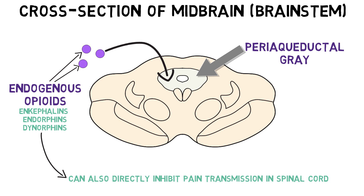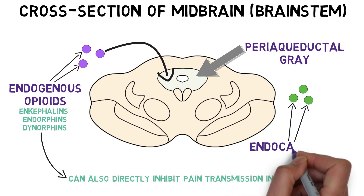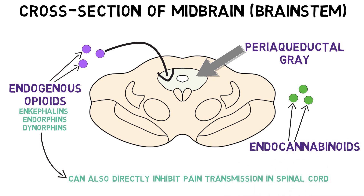Similarly, endogenous cannabinoid substances, called endocannabinoids, are thought to reduce pain by binding to cannabinoid receptors in regions such as the periaqueductal gray — receptors that cannabis can also bind to in order to cause pain relief.